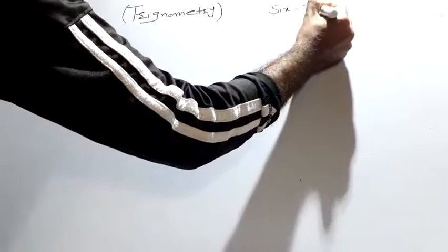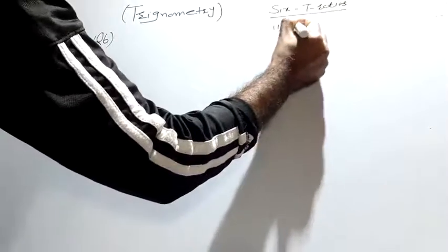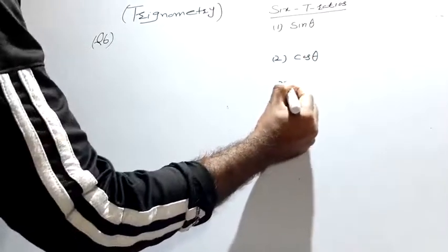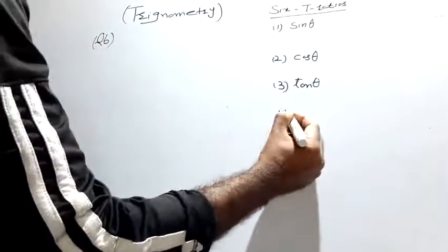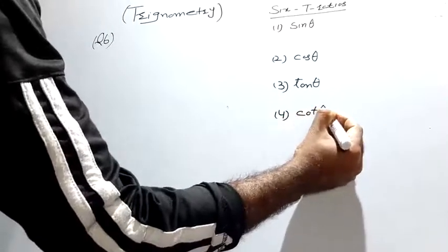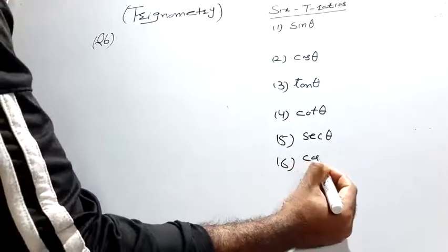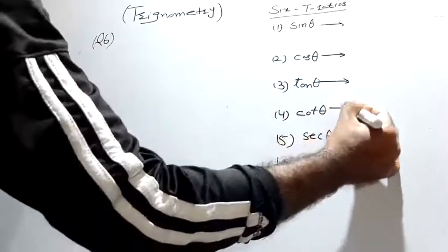In this exercise, the topic is trigonometric ratios. We have six trigonometric ratios: sin theta, cos theta, tan theta, cot theta, sec theta, and cosec theta. Keep these in mind.